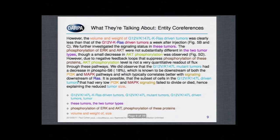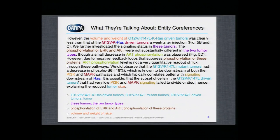Another problem is that we use different words to talk about the same thing. Here we see the volume and weight of a tumor. That's the second reference to the volume and weight of that tumor, right at the end of the paragraph, and the word used is simply 'size.' They mean the same thing. How is a machine supposed to know that? You can go through an entire paragraph and realize that we refer to the same thing four different ways.